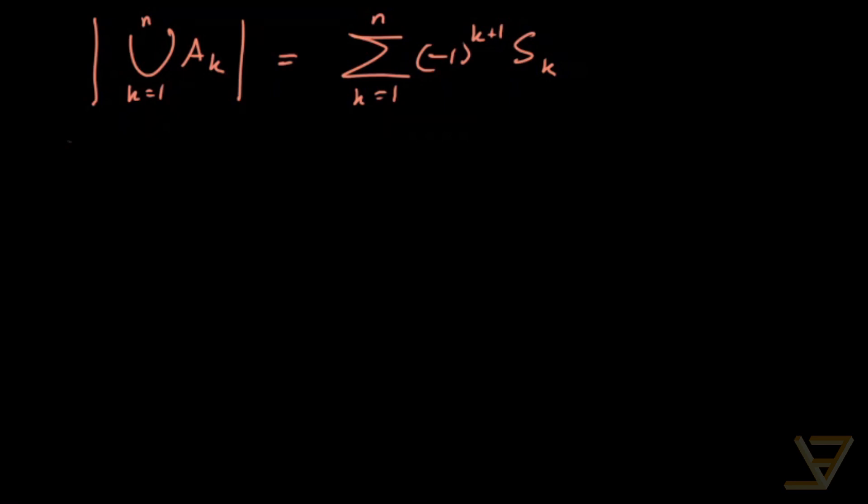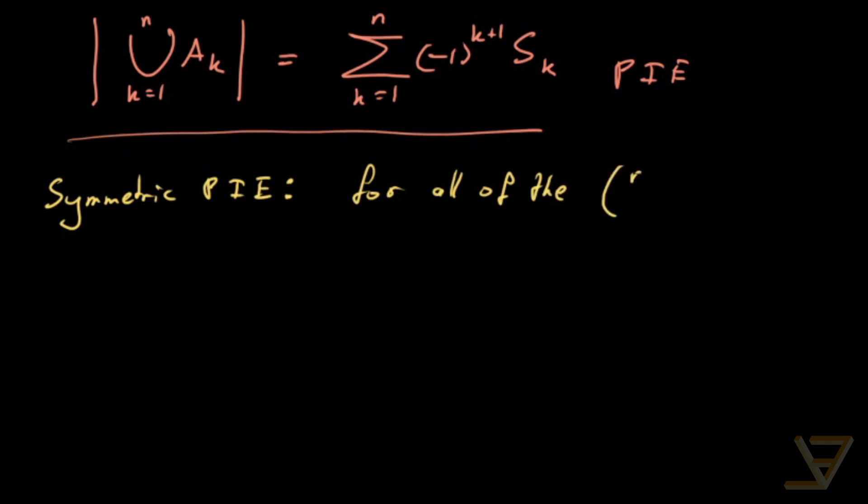But that's the general principle of inclusion-exclusion. And I just wanna show you something called symmetric PIE, because it does come up quite frequently. And that's when, for all of the n choose k, k subsets,